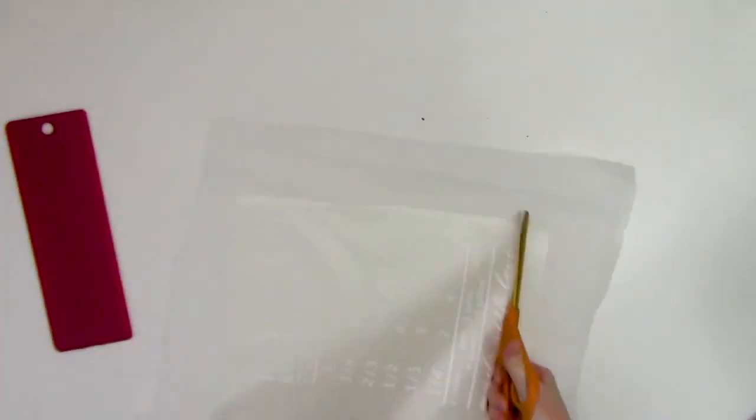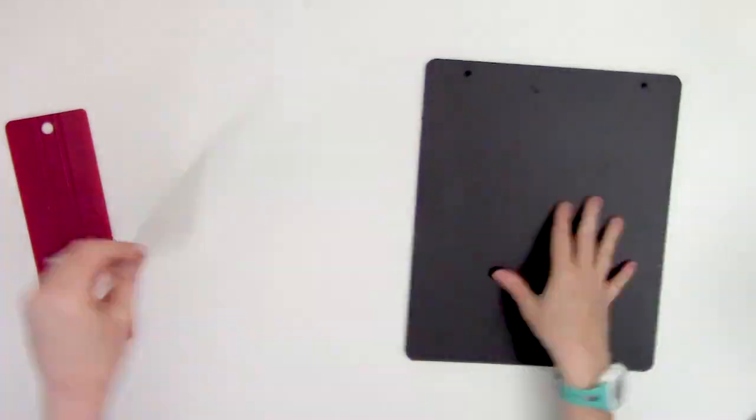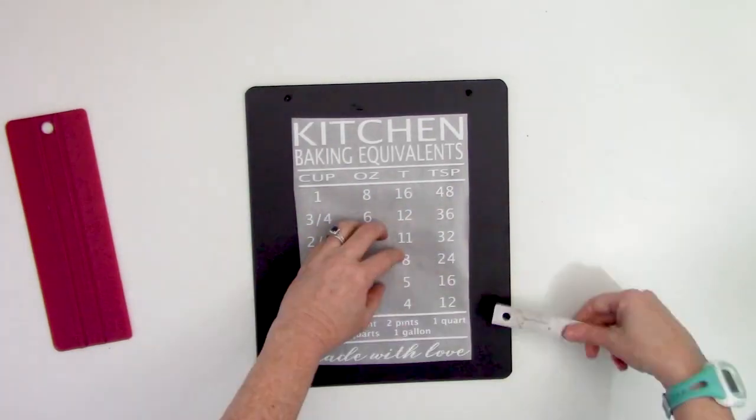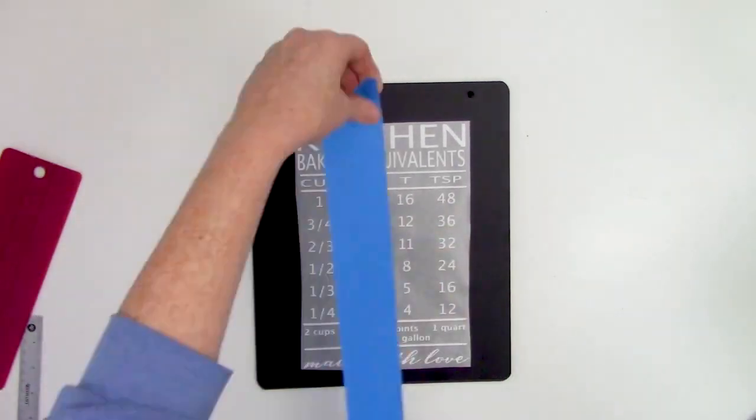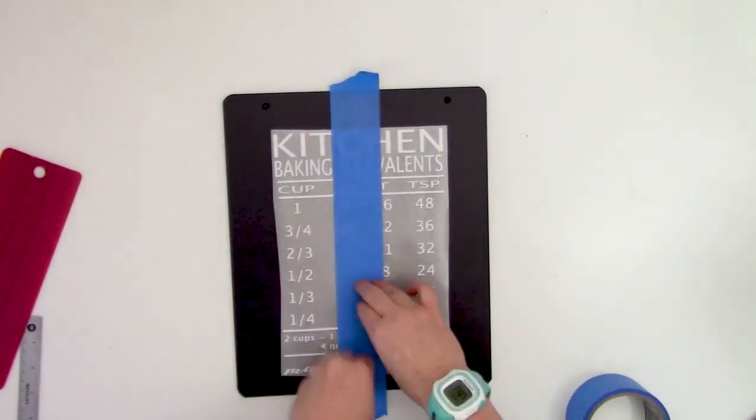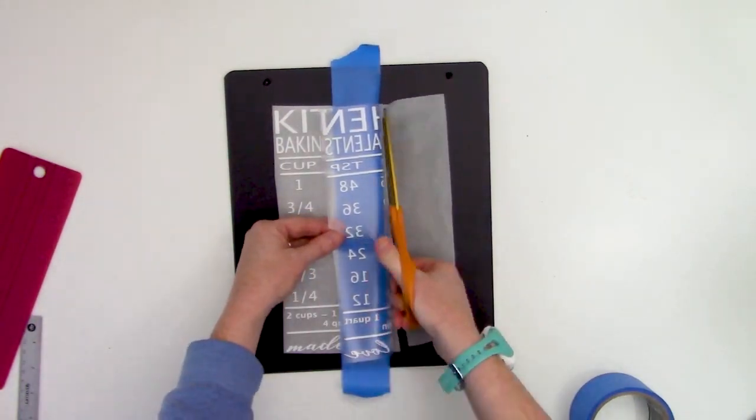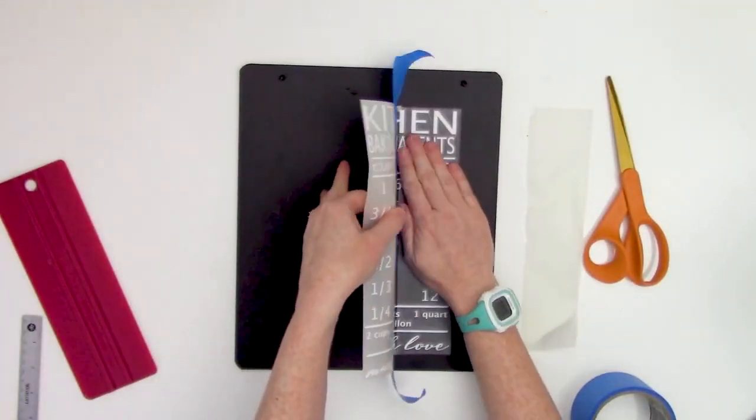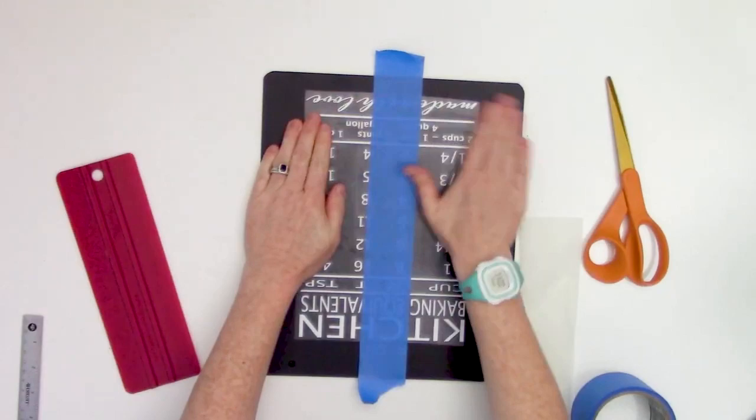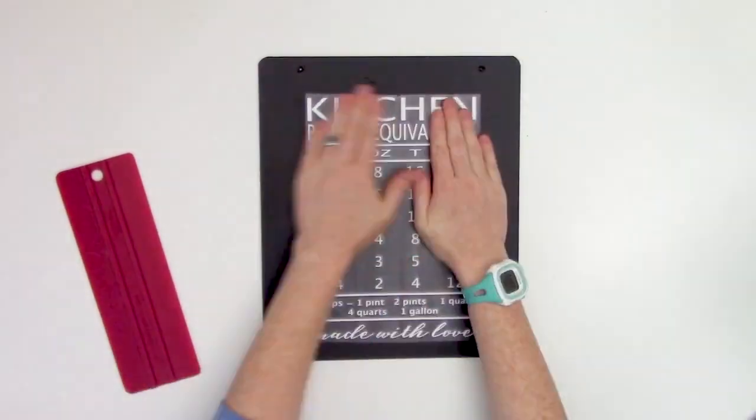After weeding, apply transfer tape. Then I like to remove the vinyl backing and replace it with a piece of parchment. This is going to help me when applying it to its surface using the hinge method. Be sure to burnish down all those little pieces really well.